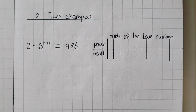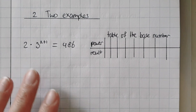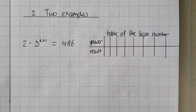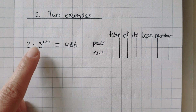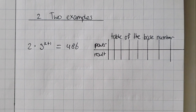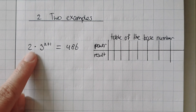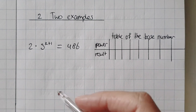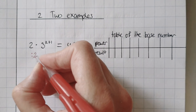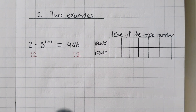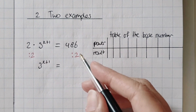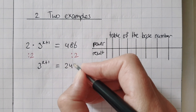Here are two examples of exponential equations. This is the first example, and I already prepared my table. Now this one looks a little bit different because there's a 2 times the power here. What I need to do first, before I can start with my table, is do the balance method, because this 2 needs to be gone. Because there's times, I'm going to do the opposite — divide by 2 on both sides. So then the 2 is gone, and I only have the power on the left side, and this divided by 2 is 243.